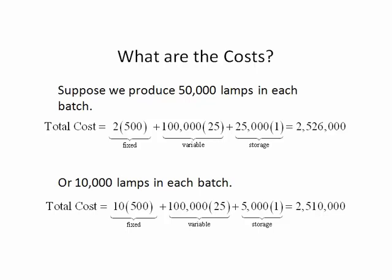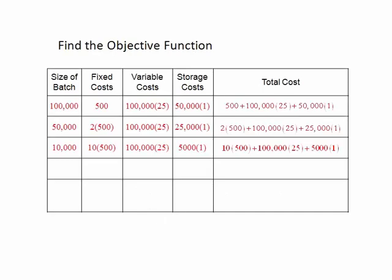As you can see from the table, as batch size is decreased, the variable costs do not change. However, the fixed costs increase as the plant has to be set up more often and the storage costs decrease.